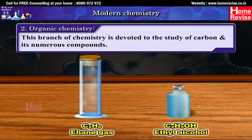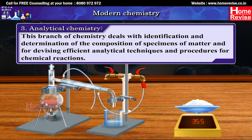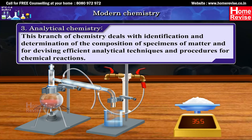2. Organic Chemistry: This branch of chemistry is devoted to the study of carbon and its numerous compounds. 3. Analytical Chemistry: This branch of chemistry deals with identification and determination of the composition of specimens of matter and for devising efficient analytical techniques and procedures for chemical reactions.